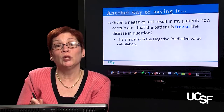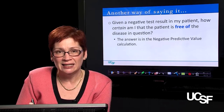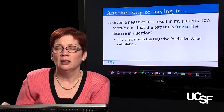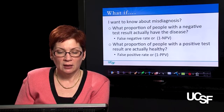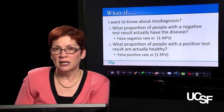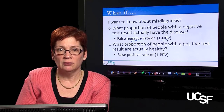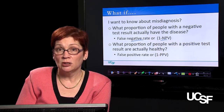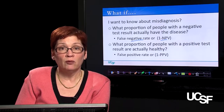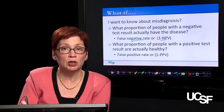An important point: negative predictive value tells you how likely it is your patient doesn't have the disease — it doesn't describe false negatives. If you want to know what proportion of people with a negative test still actually have the disease, that's the false negative rate, which mathematically equals one minus the negative predictive value. The other misdiagnosis is a false positive: what proportion of people with a positive test result are actually healthy — falsely accused of having the disease, whereas false negatives are falsely reassured they're healthy.